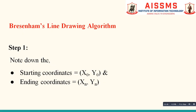Now let us see the steps to solve Bresenham's line drawing problem. For the sake of simplicity, we first note down the coordinates of the starting point and ending point given in our problem statement. Here x0 is the x-coordinate of the starting point, y0 is the y-coordinate of the starting point, xn is the x-coordinate of the ending point, and yn is the y-coordinate of the ending point. Our goal is to generate coordinates of all the points between the starting point and ending point of the line.